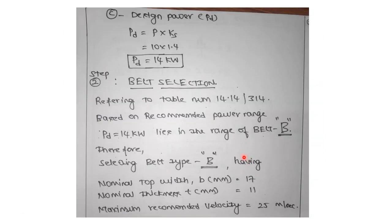In step 1C, calculate the design power which is P × Ks = 10 × 1.4 = 14 kilowatt. Step 2: select the belt type — whether it is A, B, C, D, or E.